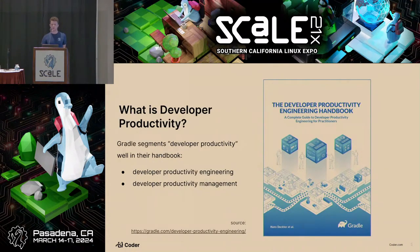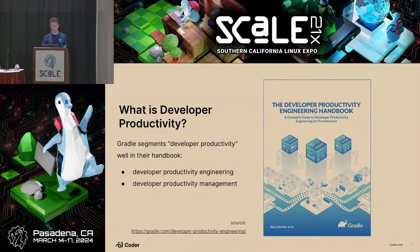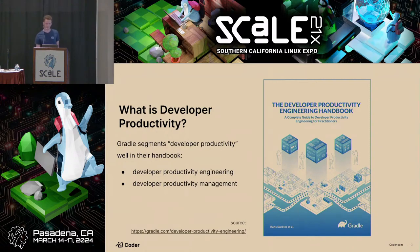What is developer productivity? I'm not an expert on this topic — Hans's book, the Developer Productivity Handbook, is 91 pages and divides it into two segments: developer productivity engineering and developer productivity management. Engineering is about optimizing machine processes, such as a slow build on a laptop, while management is about optimizing people processes. For this talk, I'll focus on the engineering aspect.